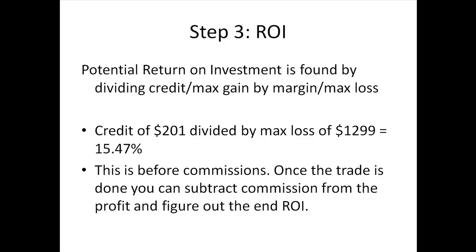I like to handle commissions at the end of the trade rather than upfront, because the commissions he counted were only for getting in. If you get out early, you'll have additional commissions. If you make adjustments, that changes your credit and commission structure. So once the trade is over, if you have a profit, subtract commissions from what you made, divide by max loss, and that gives you the actual ROI. If you have a loss, add in commissions, divide by max loss, and that gives you the total P&L.